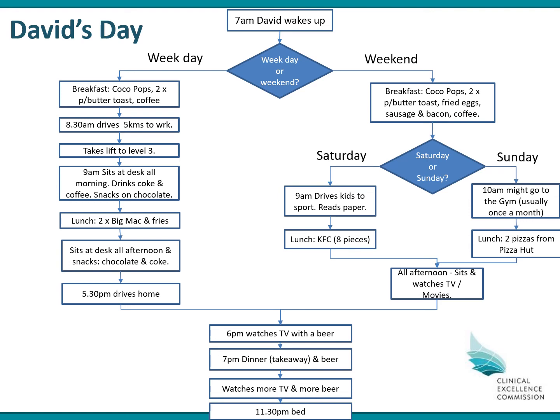On the weekend, David has a larger breakfast — cocoa pops, two pieces of peanut butter toast, plus fried eggs, sausages, bacon, and coffee. On Saturday he drives his kids to sport, sits and reads the paper, then at lunchtime goes to KFC for about eight pieces of chicken. In the afternoon he watches TV or movies, and the evening is the same. On Sunday he might go to the gym around 10am — though he usually only makes it once a month — then celebrates with a couple of pizzas from Pizza Hut for lunch, watches TV in the afternoon, and the evening is the same.